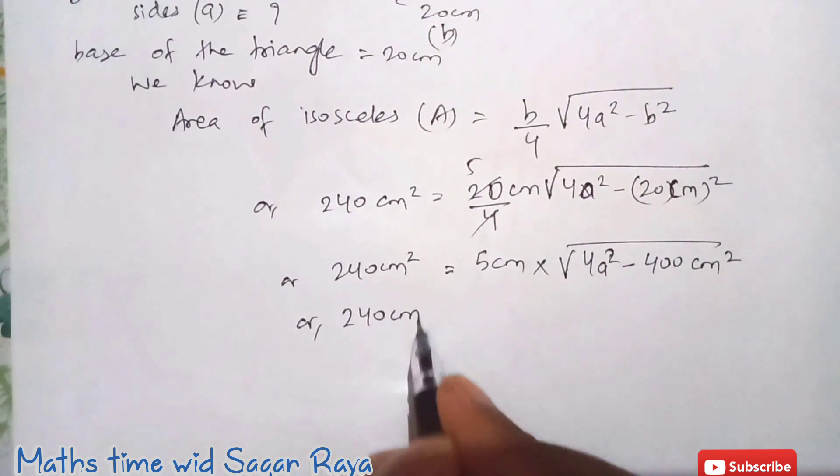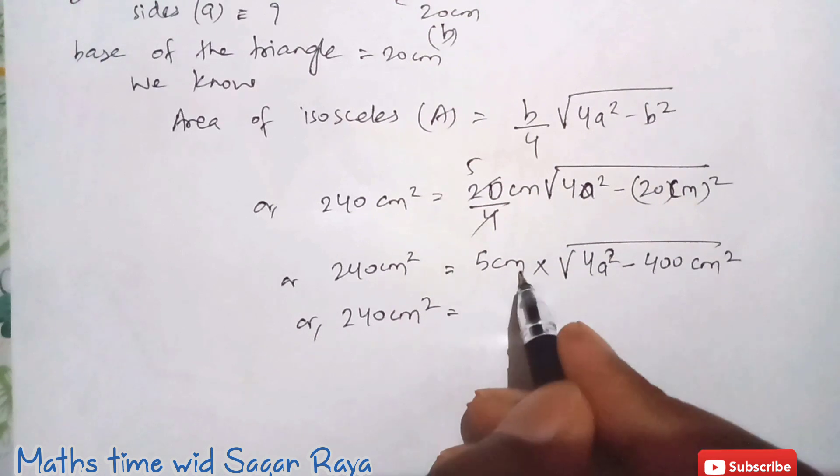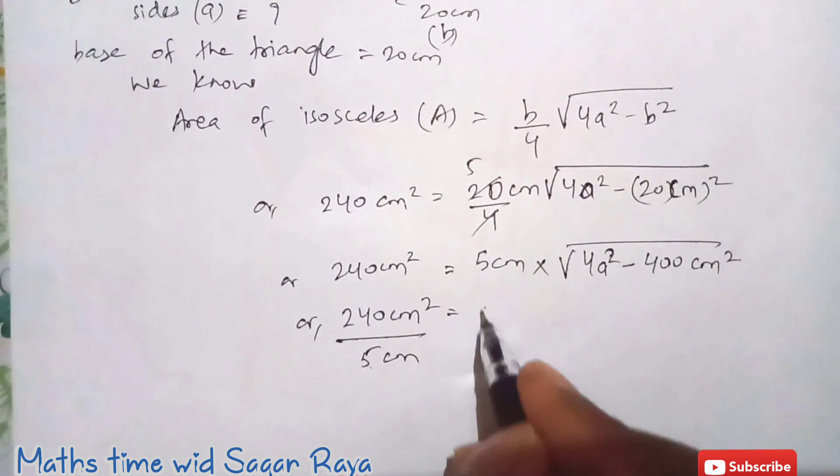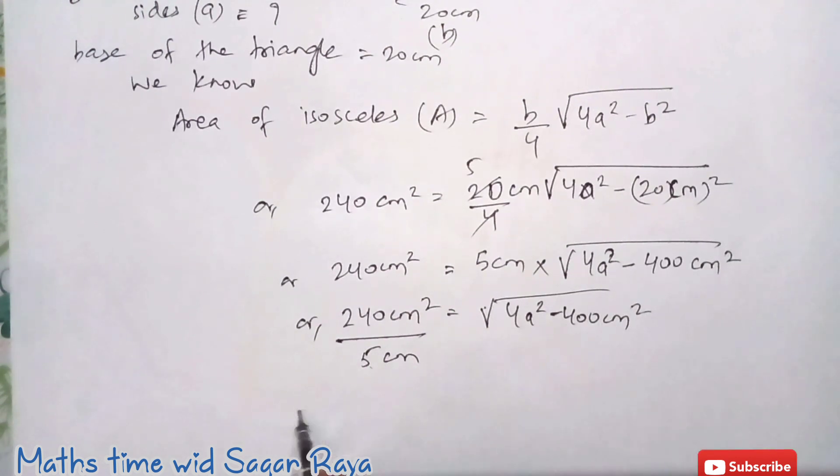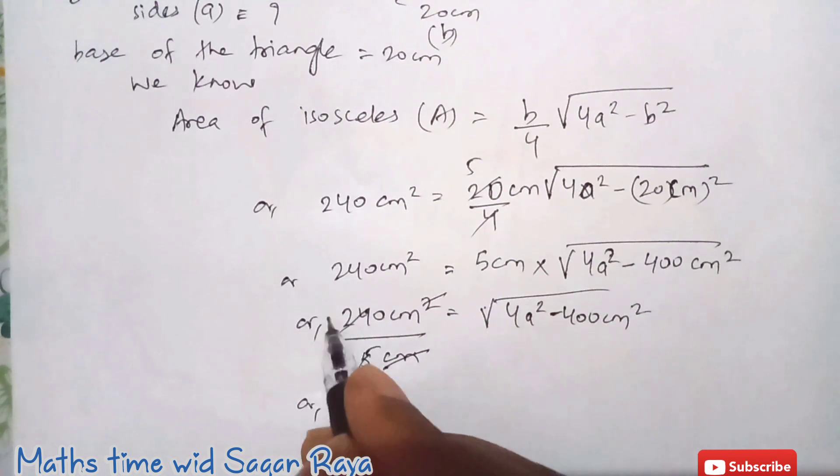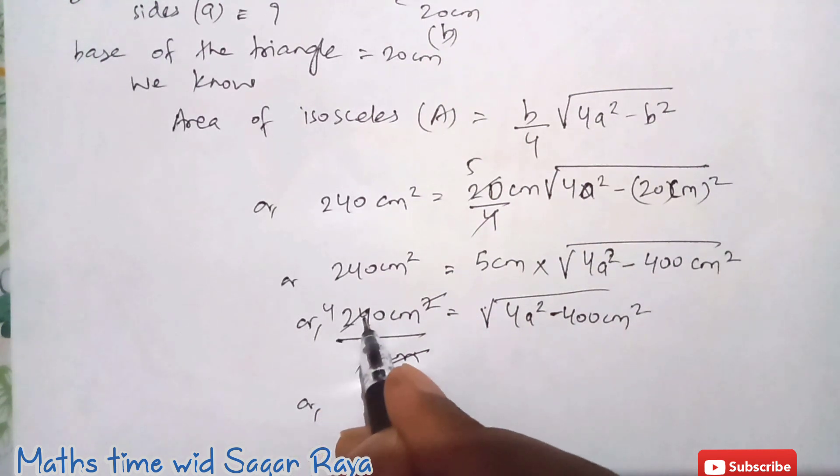So 240 cm square, this 5 cm you can just divide, bring it down. Now root under 4a square minus 400 cm square. Now if you just cancel this cm square and cm, and if you just divide 5 into 240, you will get 48.